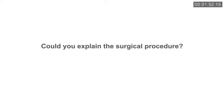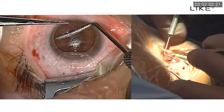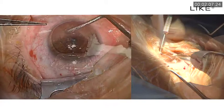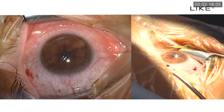Could you explain the surgical procedure? In essence, this is a two-step procedure. In the first step, we create a LASIK flap and implant a pre-prepared lenticule centered on the optical axis. The LASIK flap is closed over the lenticule. And at this point, the patient's hyperopia is corrected to a slight myopia.